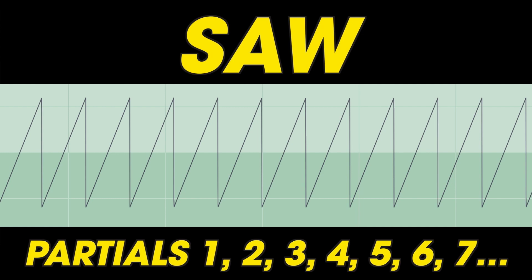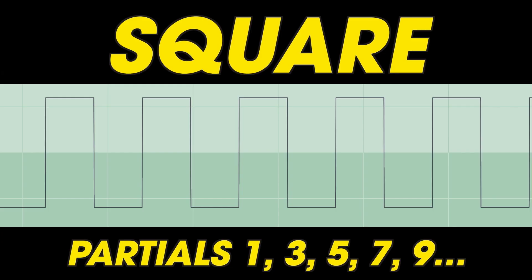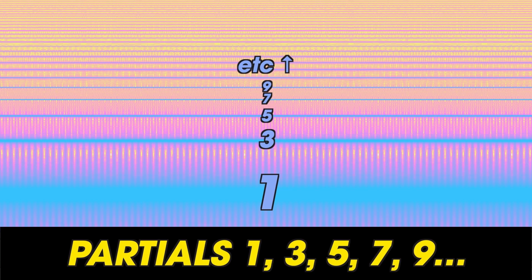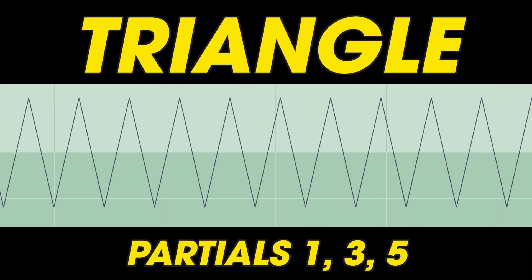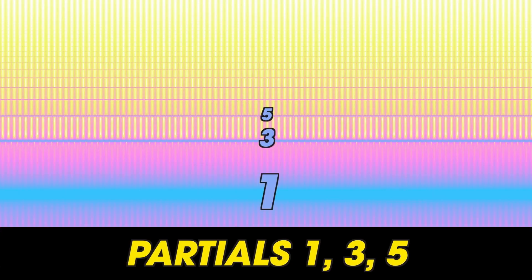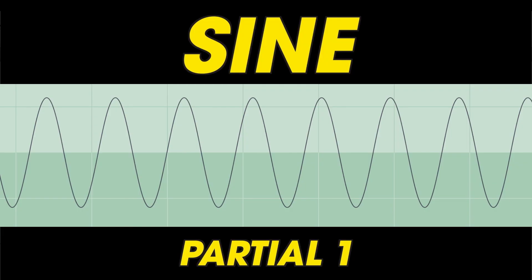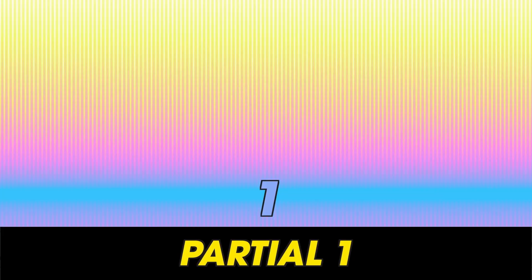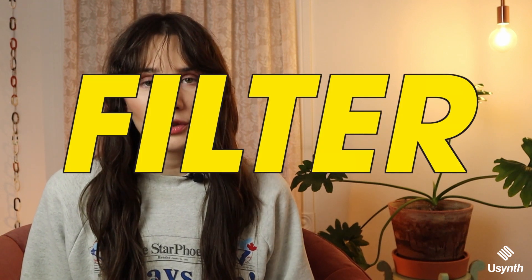Every sound in the world has partials. The frequencies and intensities of those partials, and how they change over time, is what gives a sound its spectrum. So the reason a saw wave sounds like this is because it has these partials. The reason a square wave sounds like this is because it has these partials. A triangle wave sounds like this because it has these partials. And a sine wave sounds like this because it has only the first partial, called the fundamental.